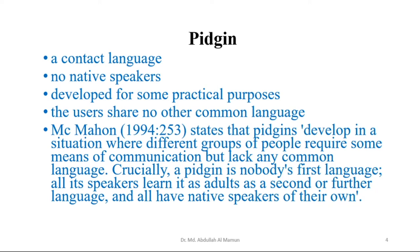McMahon states that Pidgins develop in a situation where different groups of people require some means of communication but lack any common language. Crucially, a Pidgin is nobody's first language or mother tongue. All its speakers learn it as adults, as a second or further language, and all have native languages of their own. So as they learn Pidgin as adults, they already have had a first language, a mother tongue.